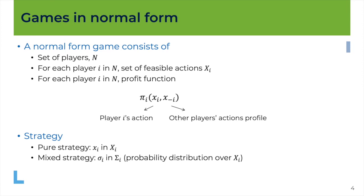So what is a game in normal form? Well this game is defined by three elements. First of all you need to define the set of players, who is playing. Then for each player, we call them i in this set N of players, you need to define what this player can do, what is the set of feasible actions for this player. We name this set capital Xi. And the third element is for each player i in this set N you need to define a profit function which we write πi. This profit function is a function of the actions taken by all players, by player i himself or herself, and by all the other players. So x minus i is our notation for the profile, the vector of the actions taken by all the other players but player i.